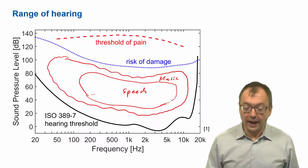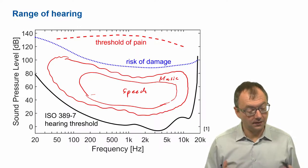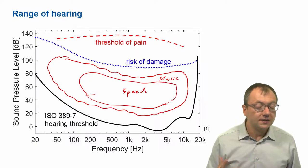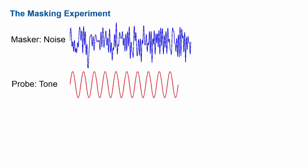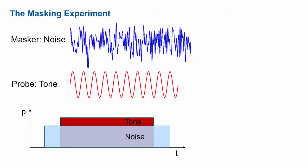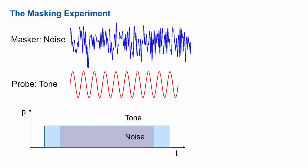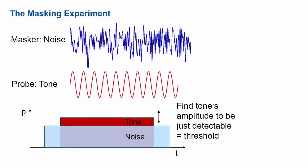Next we consider what happens when there are other sounds present. So far we had the hearing threshold given by a single tone being audible, but in many situations we have masking sounds — other sounds present — and this brings us to the masking experiment. In the simplest case, we just take a white noise and play a tone in that noise, asking somebody to tell us when they can hear the tone. We vary the intensity of the tone to find just the threshold for detecting the tone in that noise.